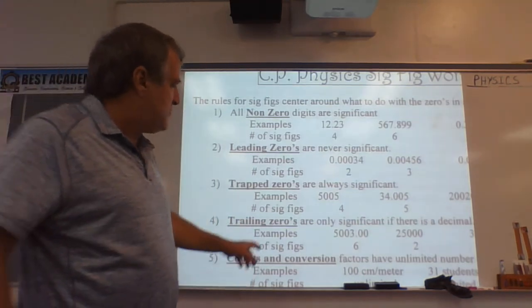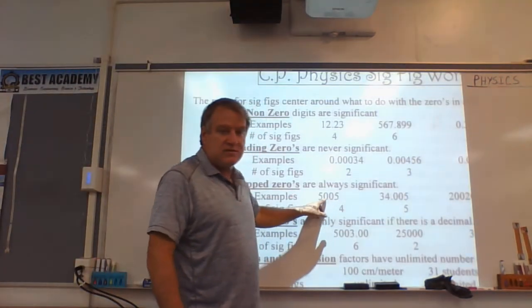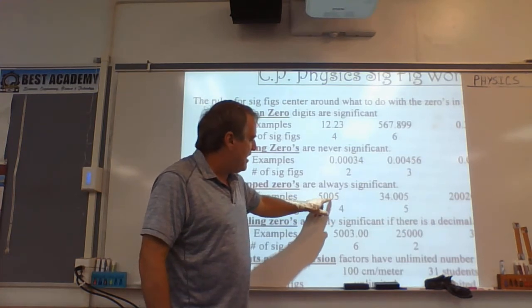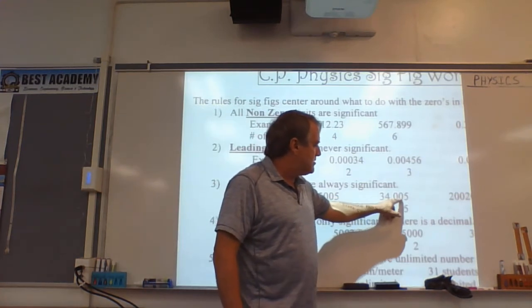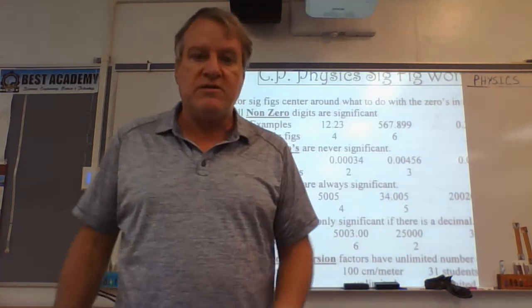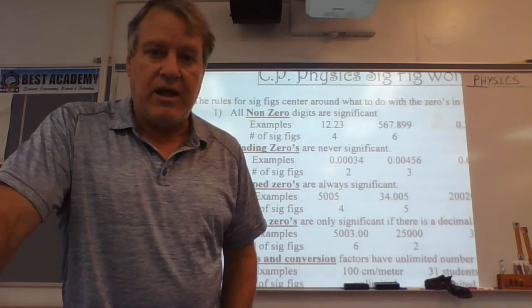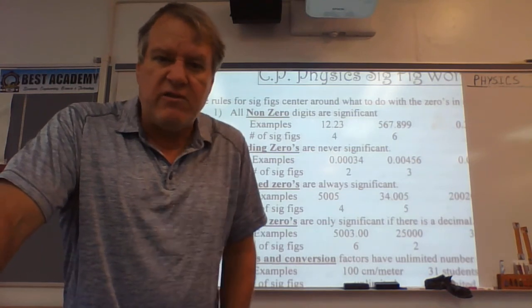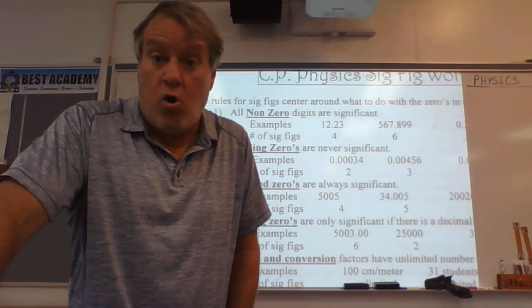If they're in the middle of two numbers, notice there's 5005, or 34.005. Look, it's between a 5 and a 4. If they're in the middle of two numbers, they always count. So pretty easy rules. They're on the front never. Zeros trapped always.